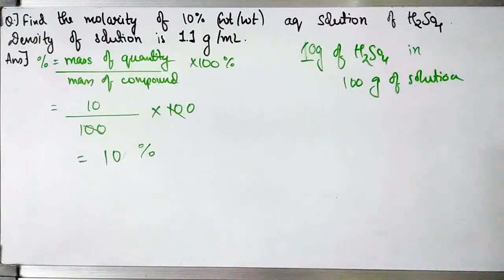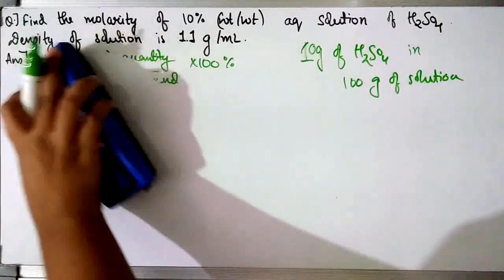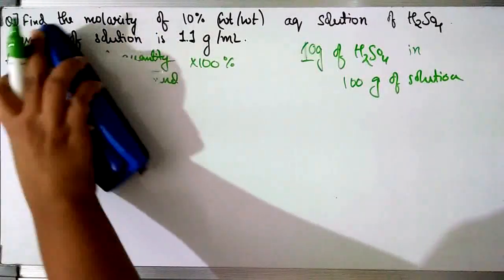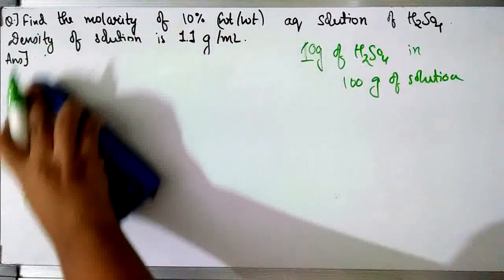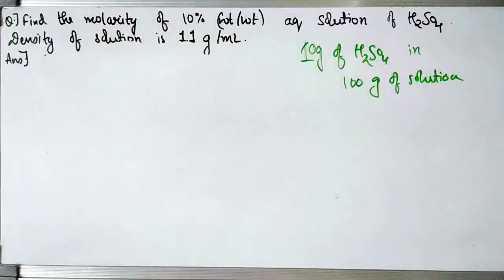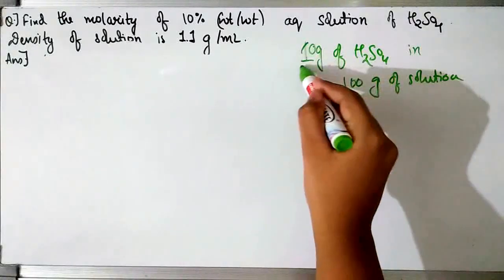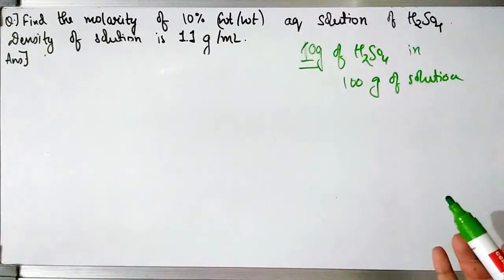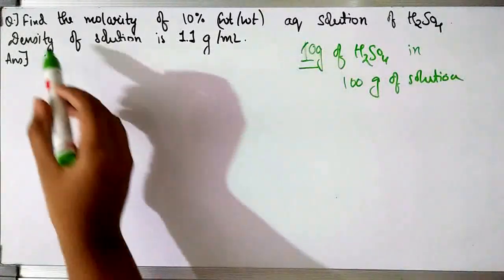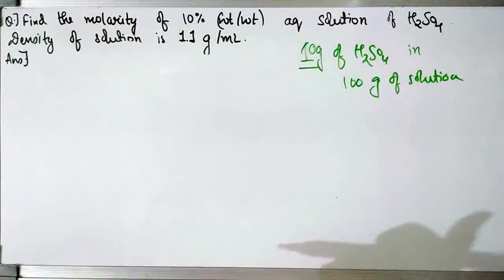We have got the weight of H₂SO₄, so now let's find the molarity. The formula for molarity is number of moles of solute upon volume of solution in litres. For number of moles we do given mass upon molar mass — the given mass is 10 grams. But for volume of solution, they have not given us the volume; they have given us the density of solution, so we can find the volume from that.